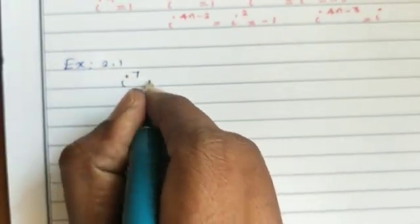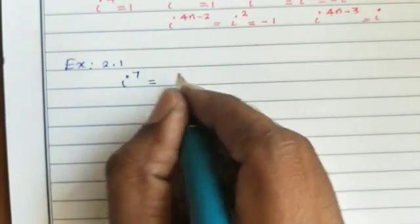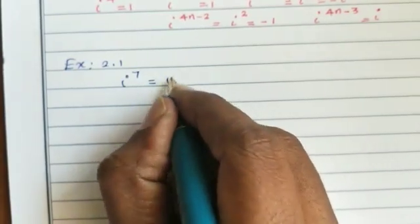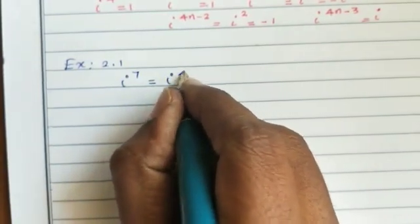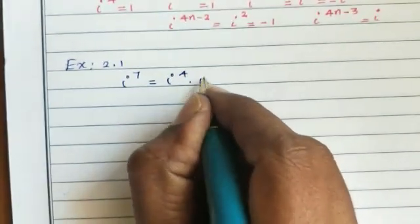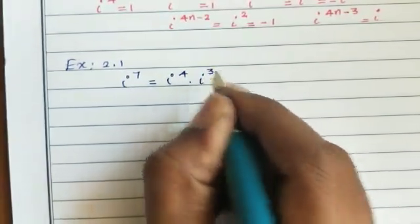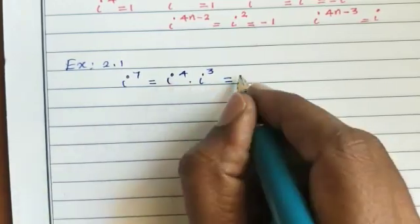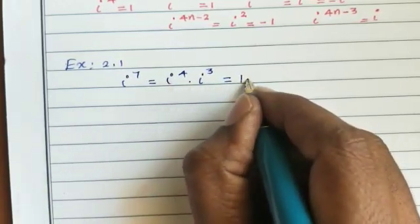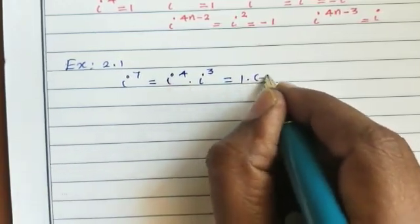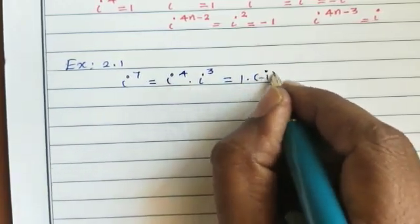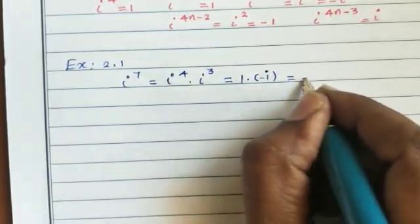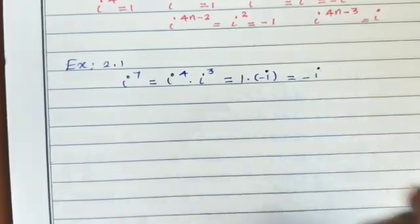Example 2.1: Simplify i⁷. i⁷ = i⁴ × i³ = 1 × (-i) = -i.